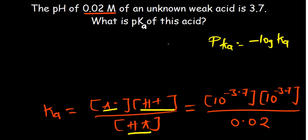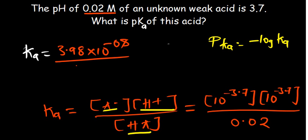So our Ka is equal to, the numerator, if you square that, having a value of 3.98 times 10 to the power negative 8, divided by 0.02. So if you divide by 0.02, the value I'm getting is 1.99 times 10 to the power negative 6.